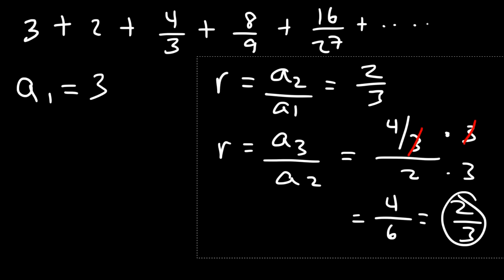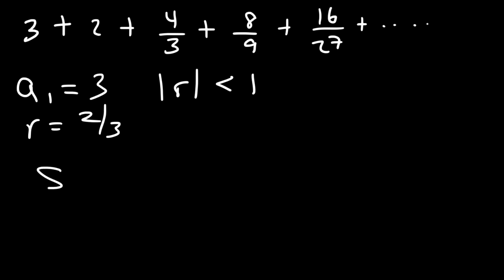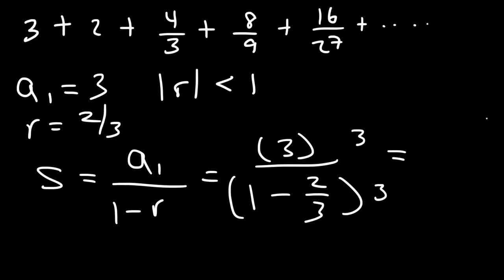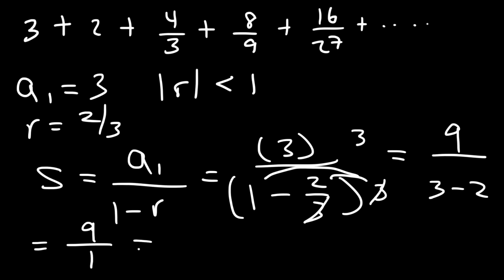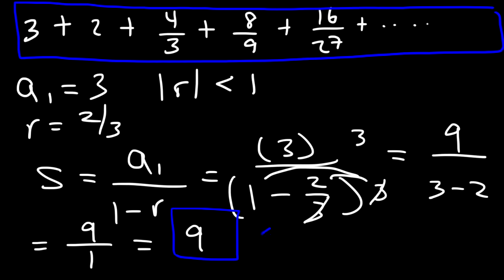So we do have a common ratio. Since the common ratio is 2 over 3, the absolute value of r is less than 1 — 2 over 3 is basically 0.6 repeating. So we can find the sum using the formula: 3 divided by 1 minus 2 over 3. Multiplying everything by 3: 3 times 3 is 9, 3 times 1 is 3, and 3 times 2 thirds gives 2. So 3 minus 2 is 1, and the sum of this series is 9.